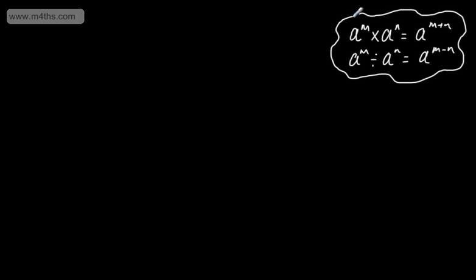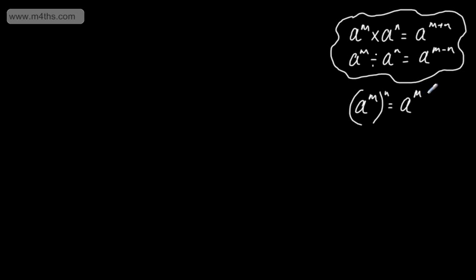In this video, we're going to look at two new rules. The first rule is: a to the power of m raised to the power of n is equal to a to the power of m multiplied by n, which we just write as mn.